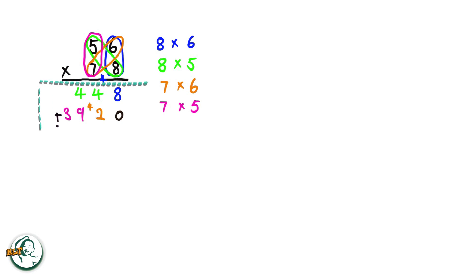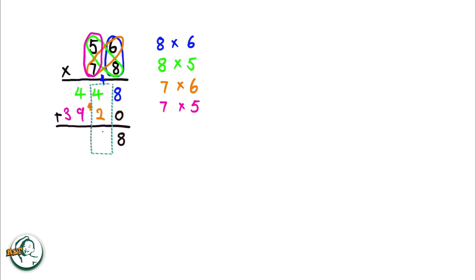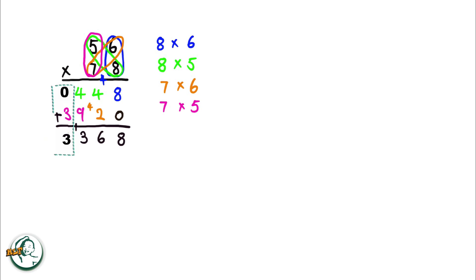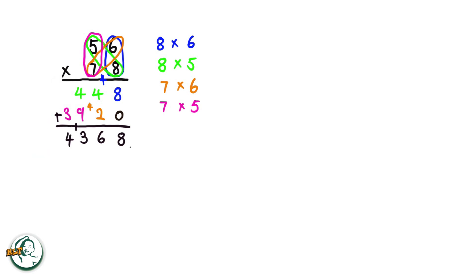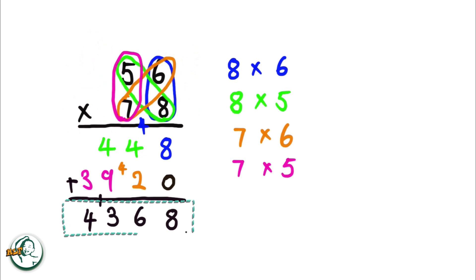Now we add these two sets of products. Adding 8 and 0 gives us 8, 4 plus 2 is 6, and 4 plus 9 is 13. We write down the 3 and carry over the 1. 3 plus 0 is 3; adding the carried over 1 to 3, we get 4. Therefore, the product of 56 and 78 is 4,368.